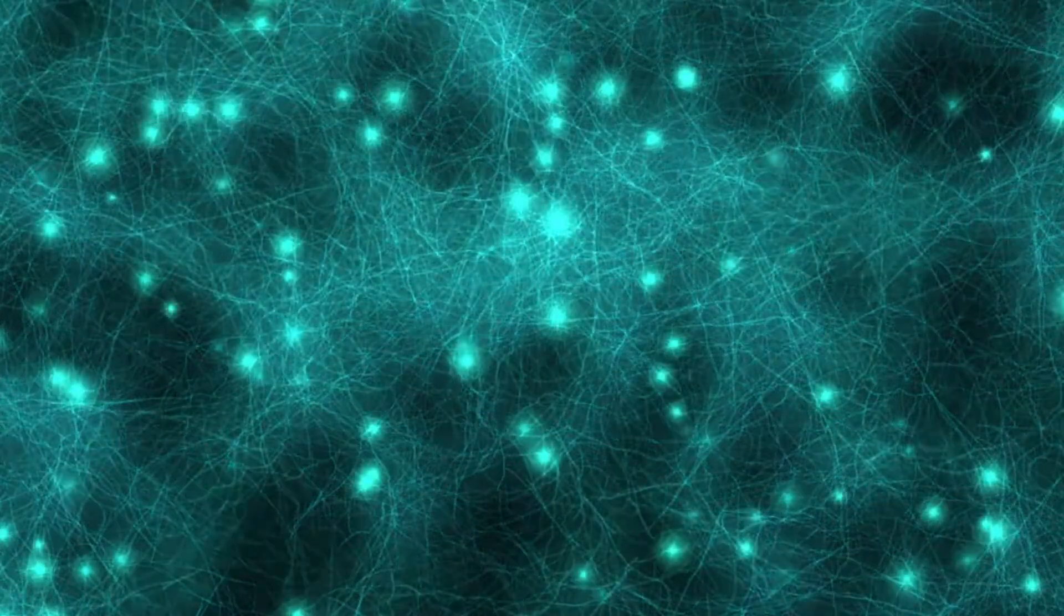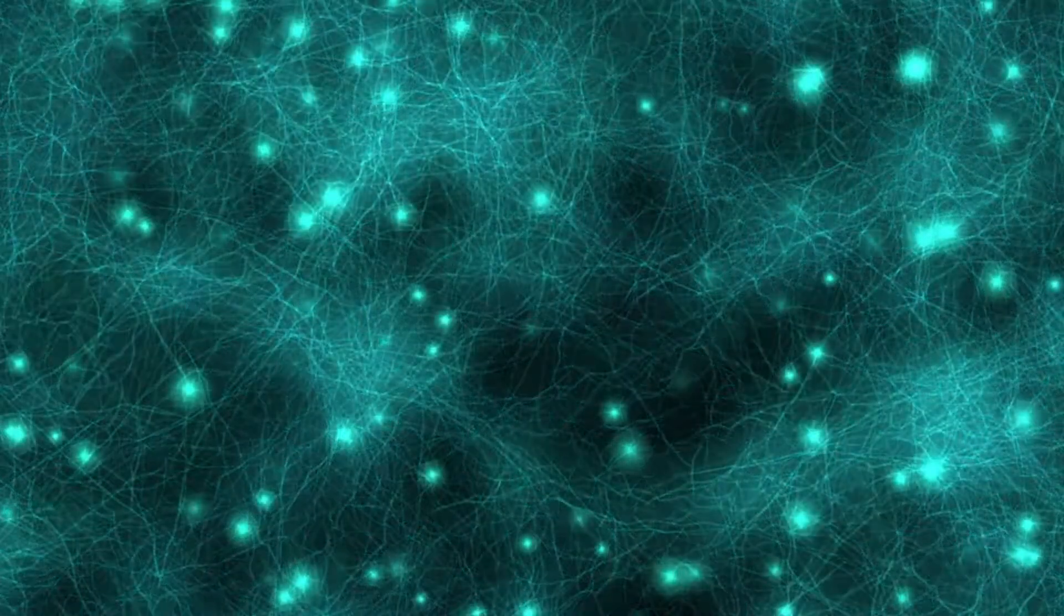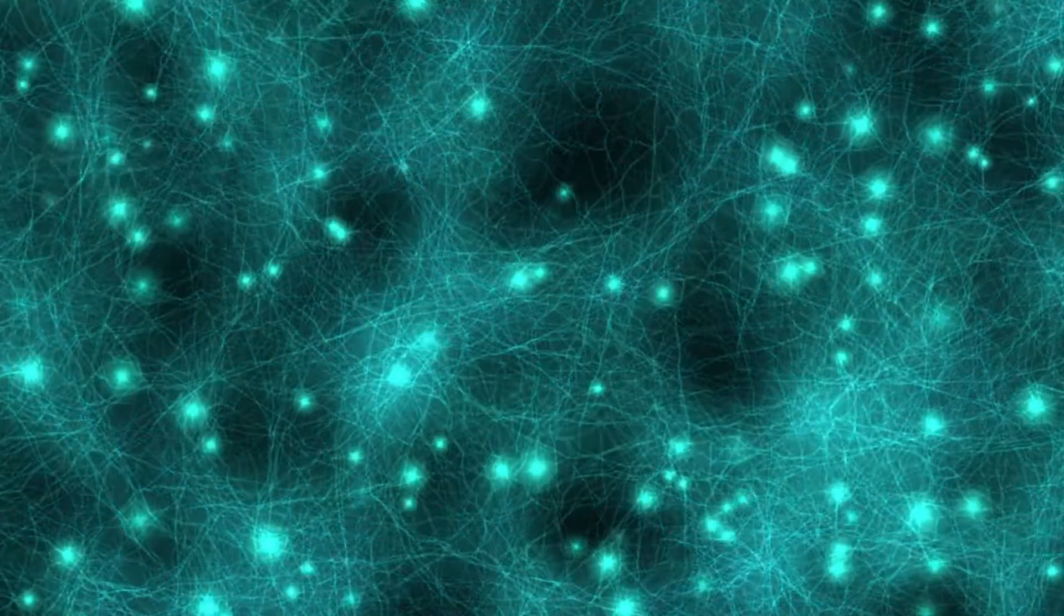By simply closing your eyes, even when you're awake and not meditating, your brain slows down to the alpha cycle.